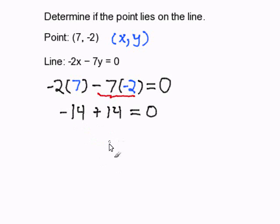Negative 14 plus 14 will get you 0, and 0 equals 0, and that checks out. So this point is a solution for this equation. Therefore, this point lies on this line, and this completes my problem.